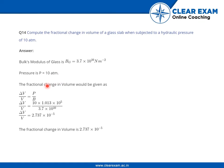The fractional change in volume is given as ΔV/V = P/B. Substituting the values of P and B, we get ΔV/V = 2.737 × 10^-5.